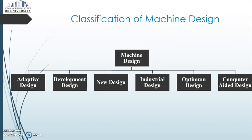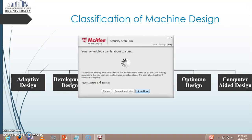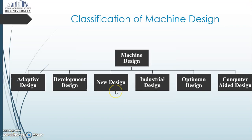When we move ahead to the classification of machine design, there are several types, but the basic required ones are: adaptive design, development design, new design, industrial design, optimum design, and computer-aided design.